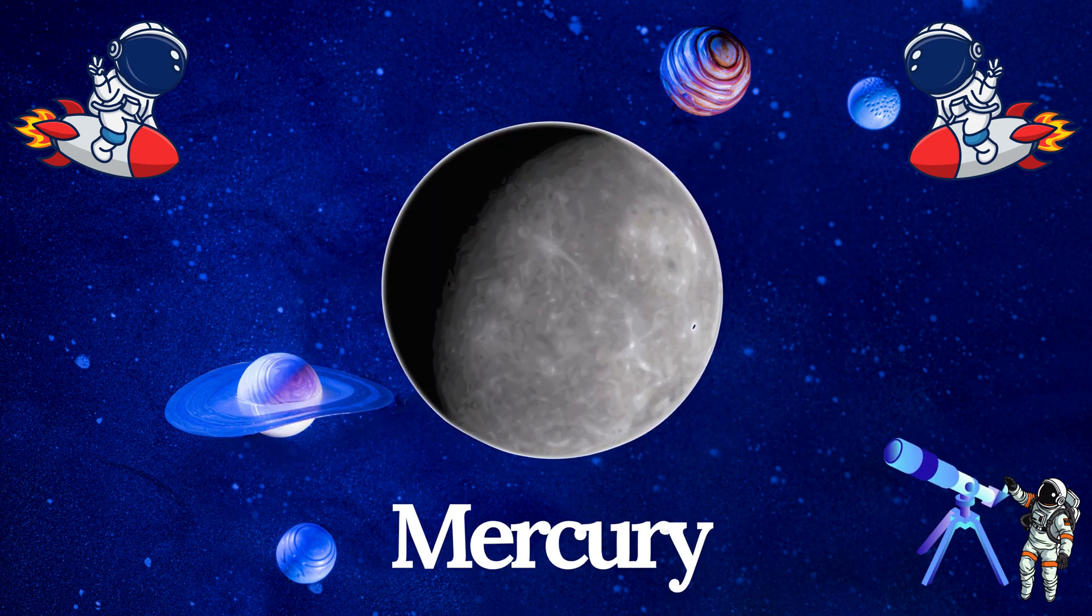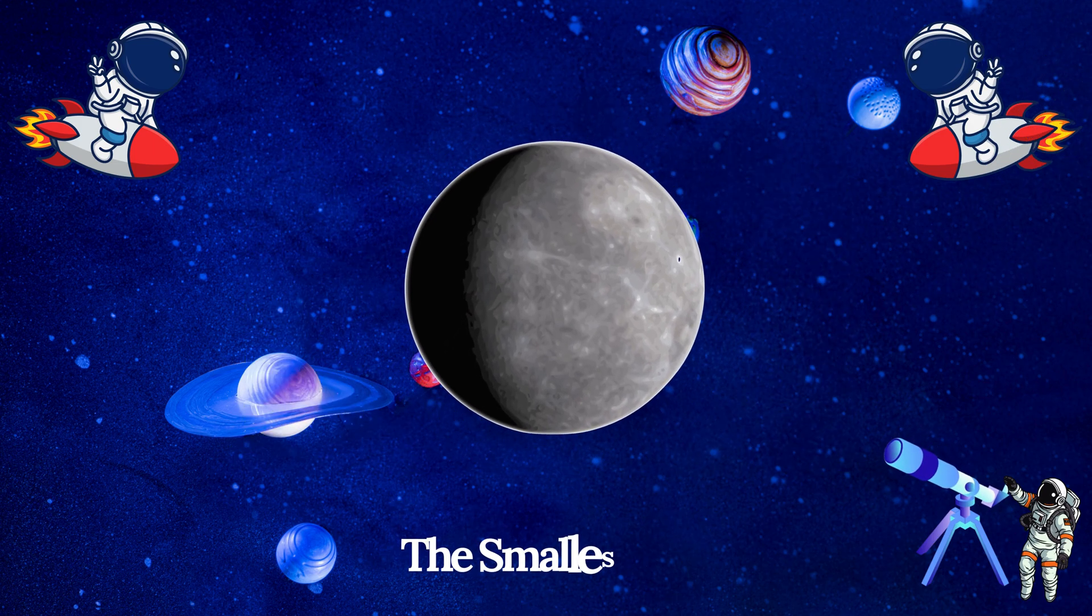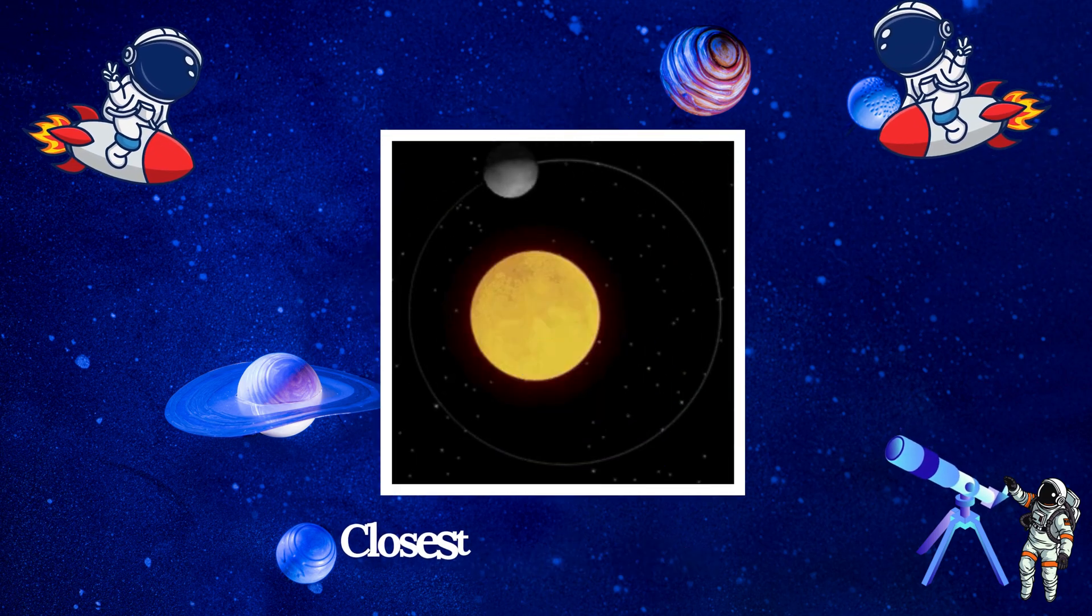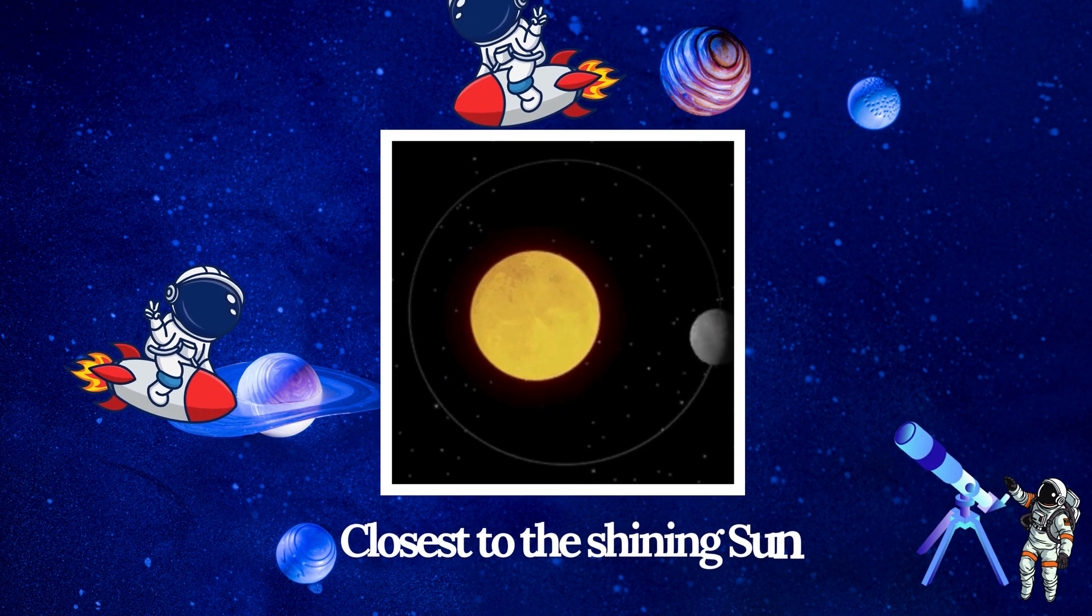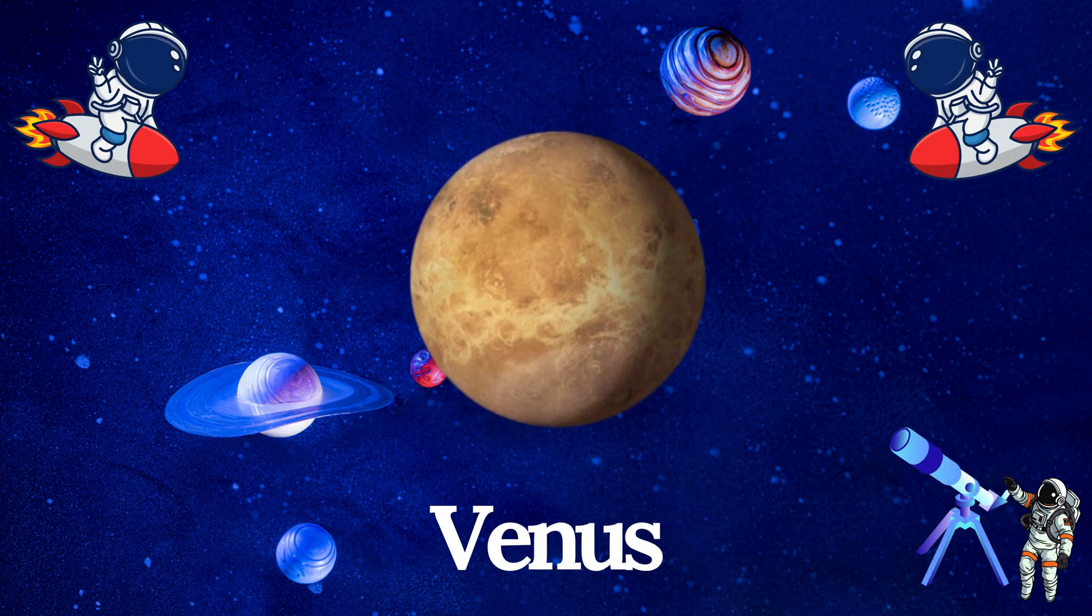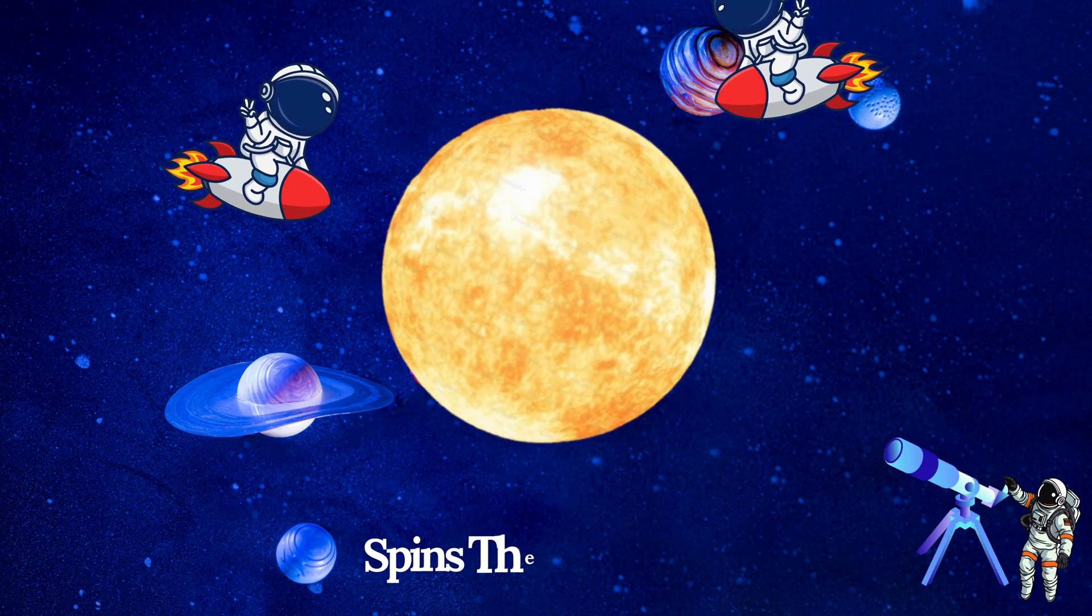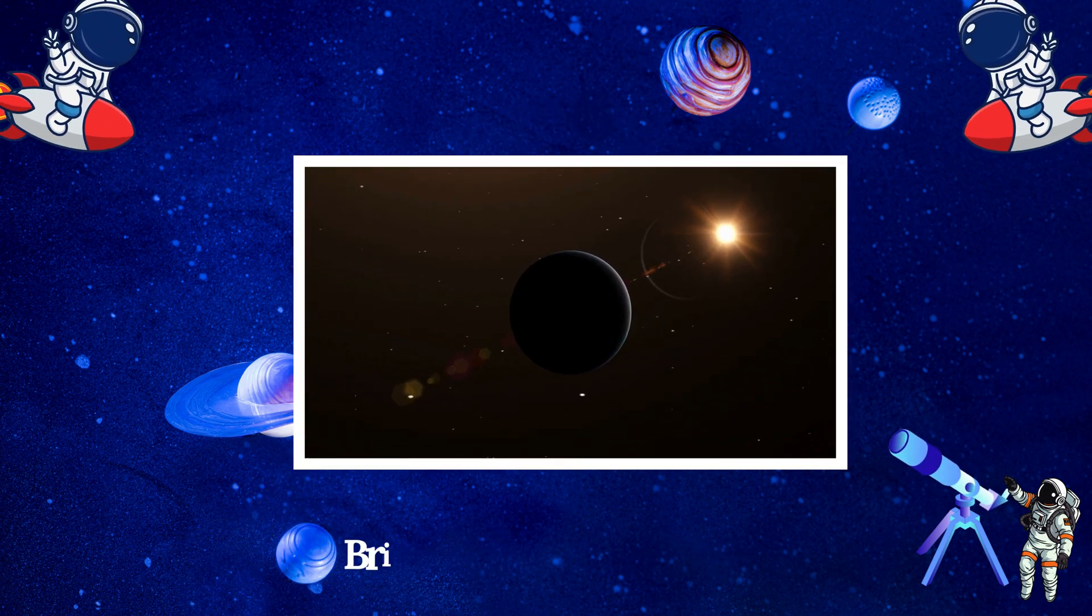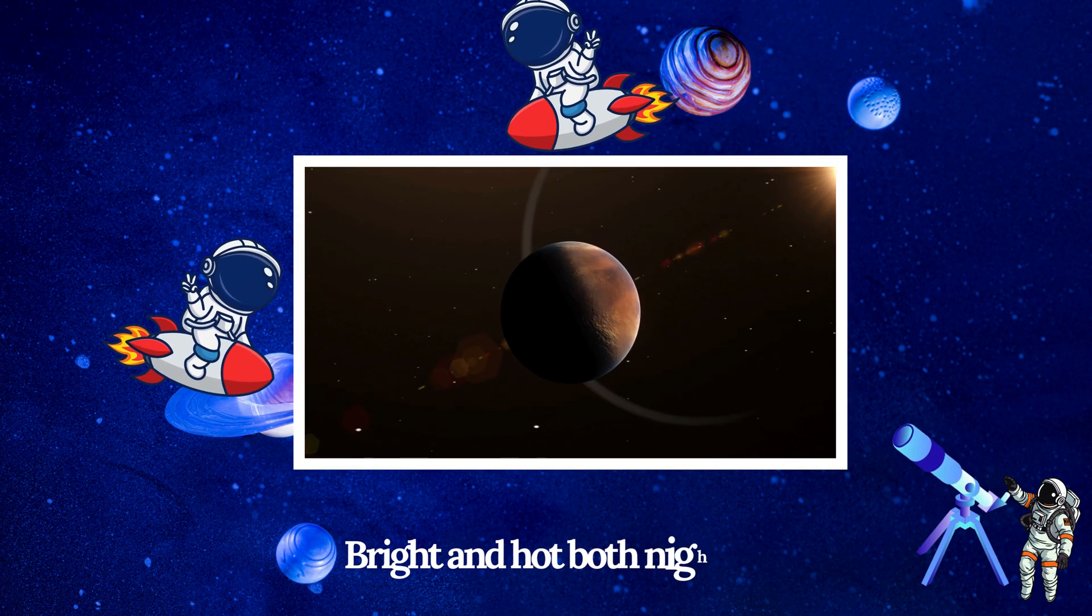Mercury, the smallest one, closest to the shining sun. Venus spins the other way, bright and hot both night and day.